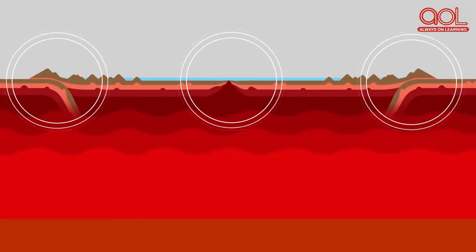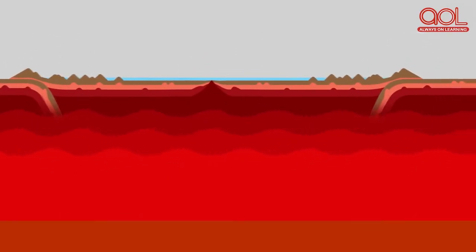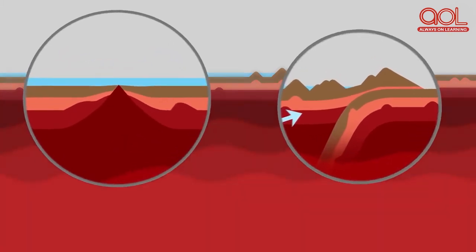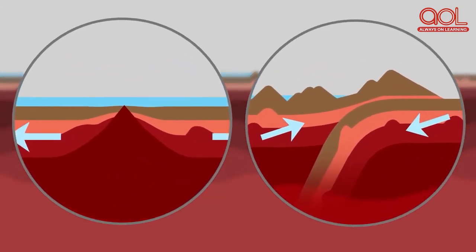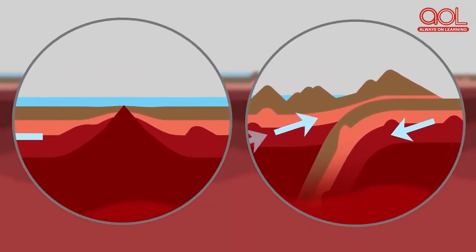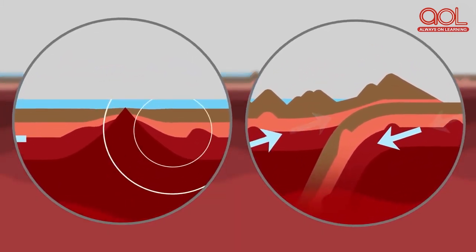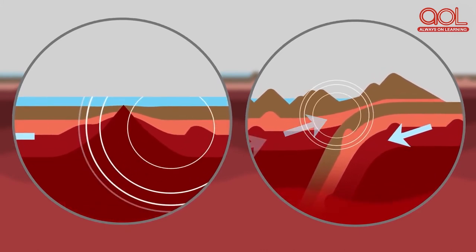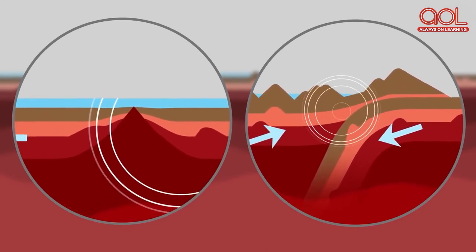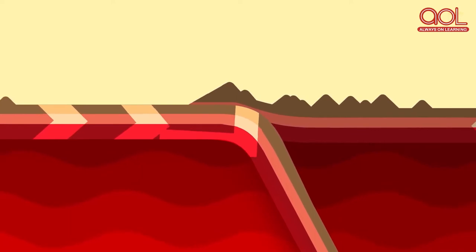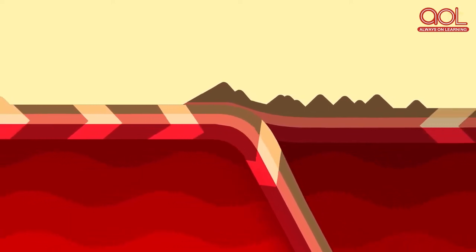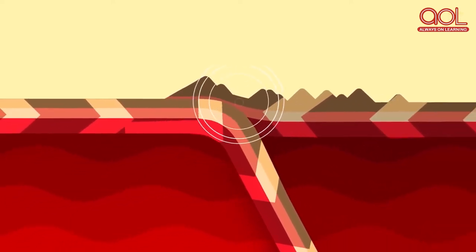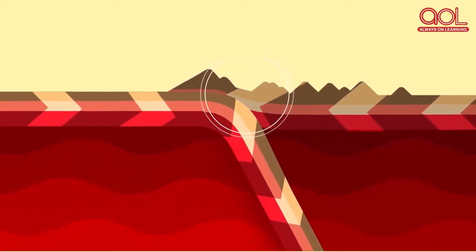Sometimes an earthquake has foreshocks — smaller earthquakes that happen in the same place before a larger earthquake occurs. The largest main earthquake is called the main shock, which is always followed by aftershocks that occur in the same place and can continue for weeks, months, and even years after the main shock.